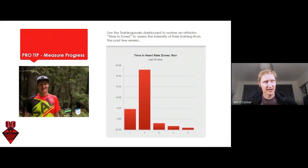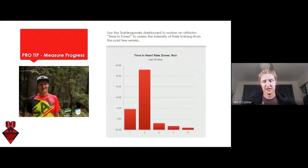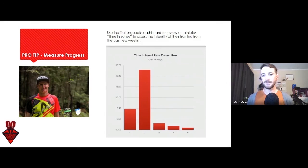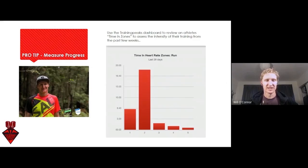Here's my pro tip: look at time in zones — heart rate, power, or pace depending on your predominant measure — and look at the percentage contribution across a week of training. That way you can see what percentage of time was spent above zone two, giving you a quick way to check your 80/20 rule. Looking across the last four weeks, you can see how much time was spent going easy — and it looks like most of it was.